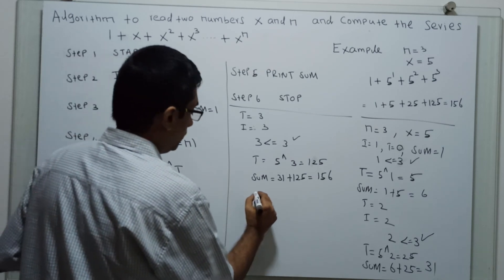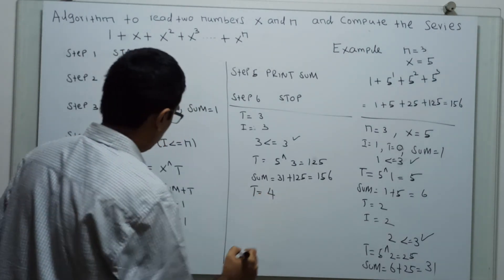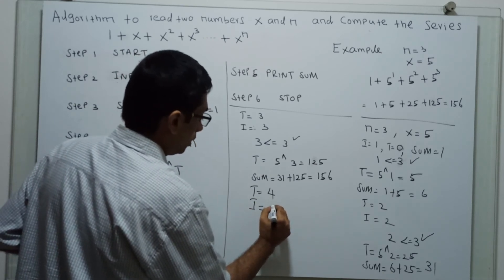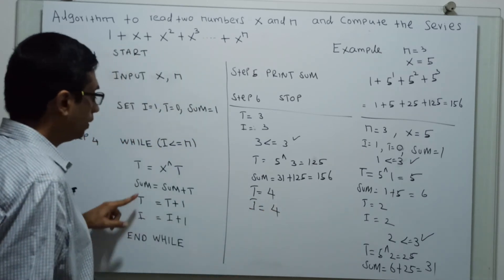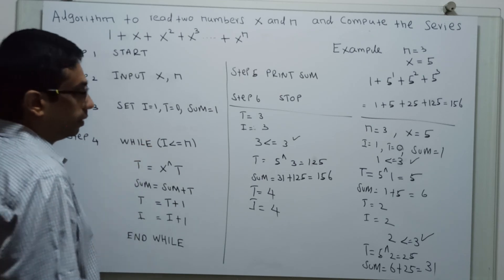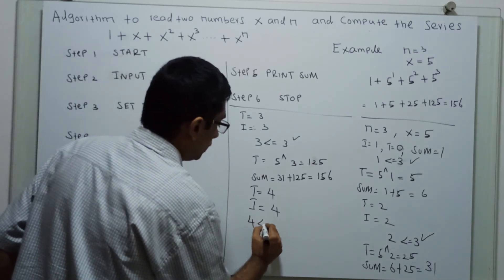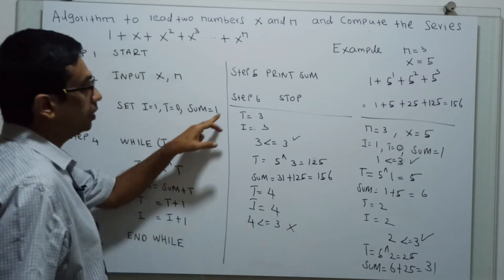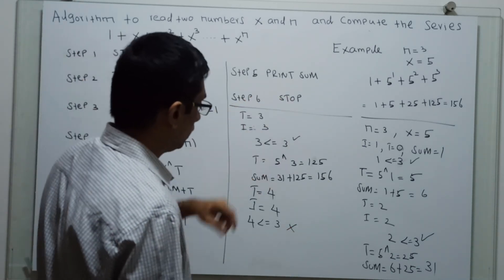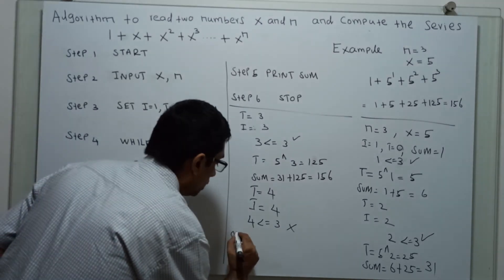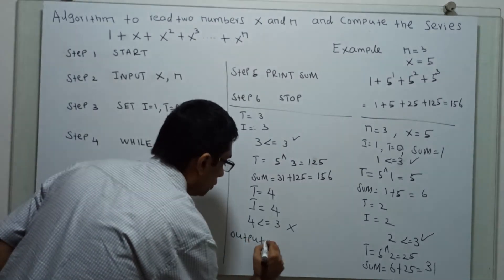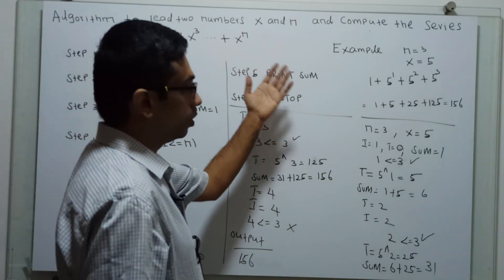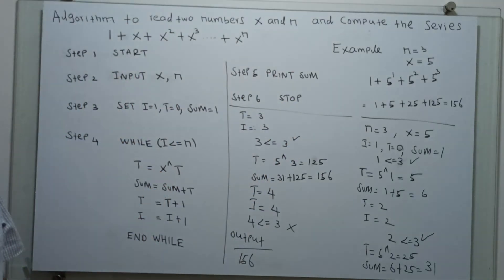Now t equal to t plus 1 becomes 4, and i becomes 4. We check the condition: 4 less than or equal to 3 — that means i less than or equal to n is false. It will come to step 6 and print the result of sum. Output equals 156, and the algorithm will stop. In this way, the algorithm works.